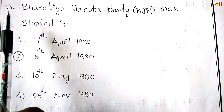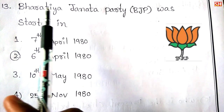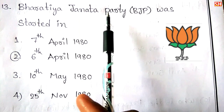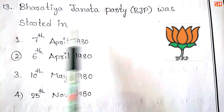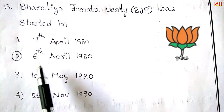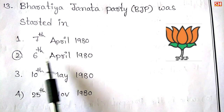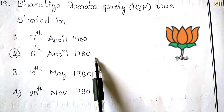Thirteenth question: Bharatiya Janata Party, BJP, was started in? Answer: 6th April 1980.